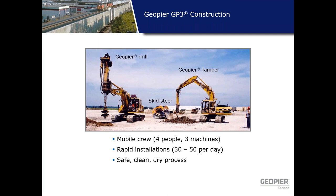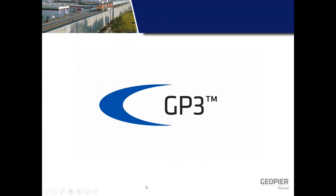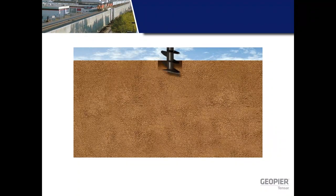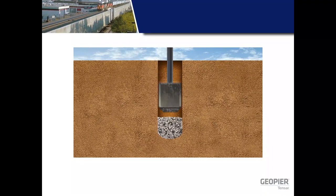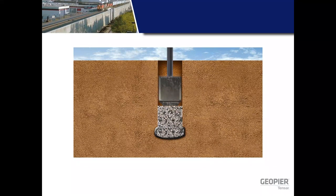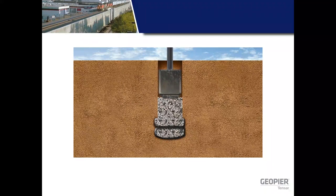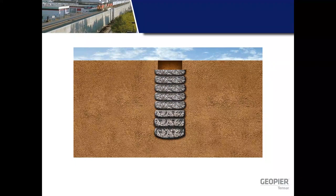I'm going to play a video to demonstrate the installation of the GP3 system. GeoPier elements are constructed by drilling out a volume of soft soils to create a cavity, then ramming aggregate into the cavity in thin lifts. A bottom bulb is constructed using open-graded stone, and then well-graded stone is used in thin lifts to construct the GeoPier element. As this bevel-shaped tamping foot applies the ramming effort on the aggregate, it laterally pushes the soils outward, inducing lateral stresses in the matrix soil.